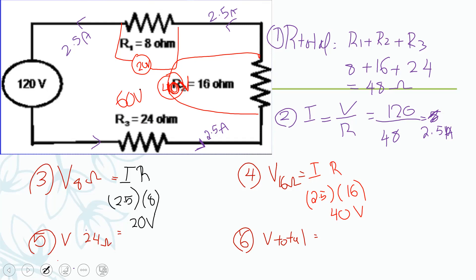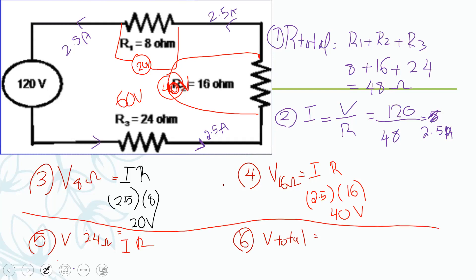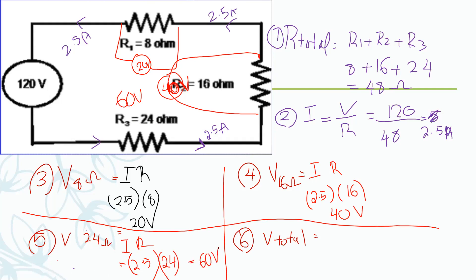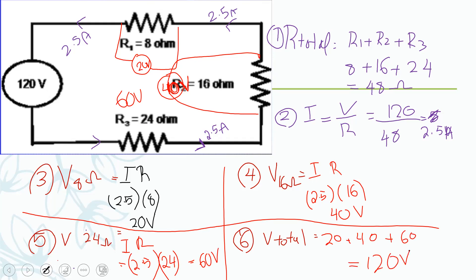Let's verify using the rule: V equals I times R, so 2.5 times twenty-four equals sixty volts. To find the total voltage, add twenty plus forty plus sixty, which equals one hundred twenty volts — the same as the supplied voltage. This confirms the series circuit voltage rule.